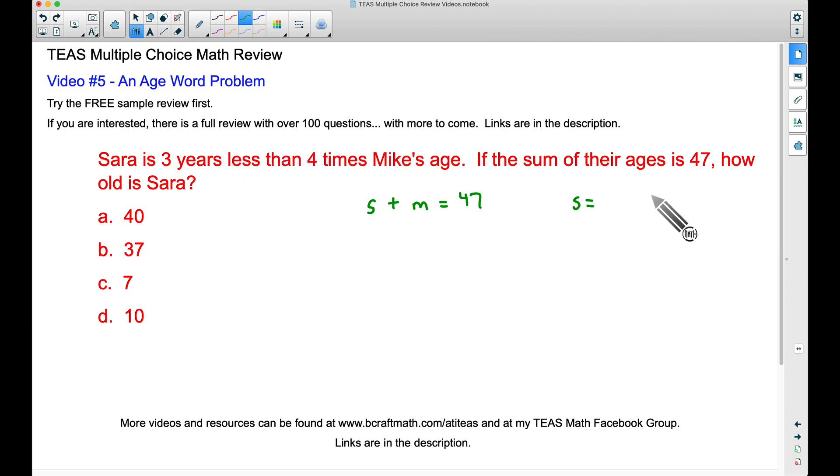Here is a common mistake I see. Students write 3 minus 4M. That is not correct. You got this mixed up. It should be written like this: 4 times Mike's age minus 3. Think about this: if you are three years less than somebody else's age, suppose somebody is 20 and you are three years less, you would take 20 minus 3, not 3 minus 20. The same idea applies here. Three years less than four times Mike's age means we have 4M and we subtract 3 from it: S = 4M - 3.